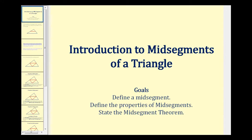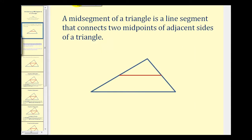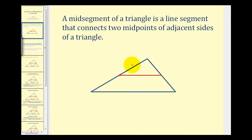Welcome to an introduction to mid-segments of a triangle. A mid-segment of a triangle is a line segment, pictured here in red, that connects two midpoints of adjacent sides of a triangle. This is the midpoint of one side of the triangle, so this segment is congruent to the adjacent segment. And this is the midpoint on the adjacent side of the triangle, so this segment is congruent to the other segment.